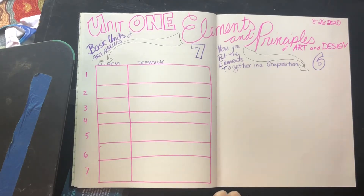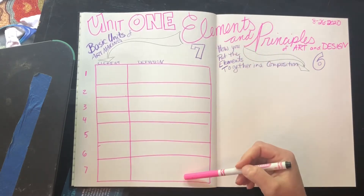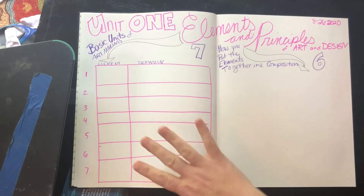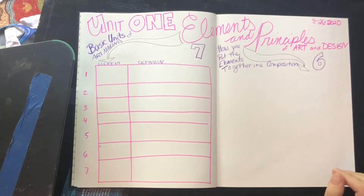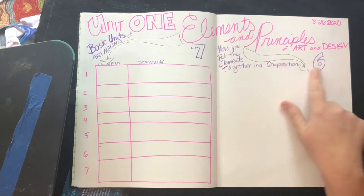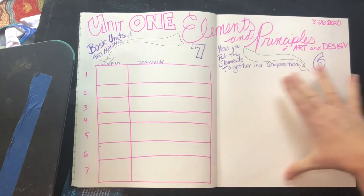This is for our unit on the elements and principles. There are seven elements, so I have seven spaces. You may ask how I did that — it's kind of easy, and I didn't measure anything, because I'm not really interested in measuring stuff. Over here there are six principles of design.